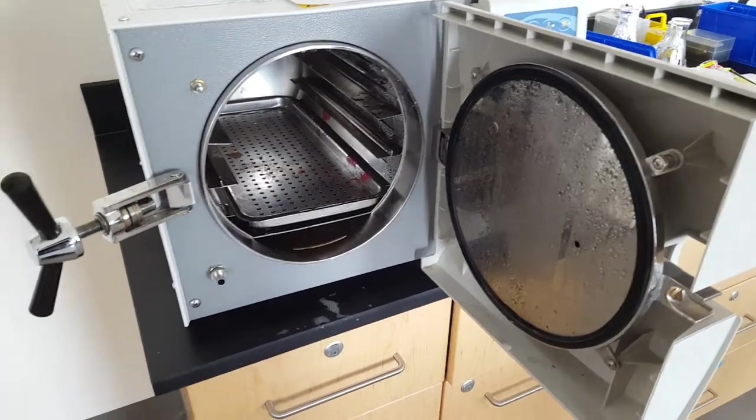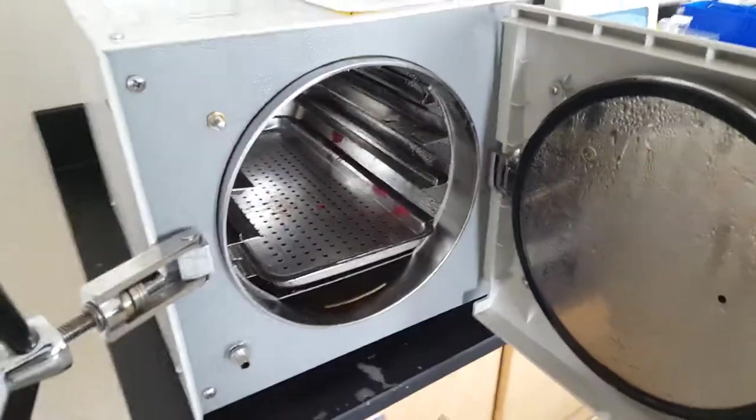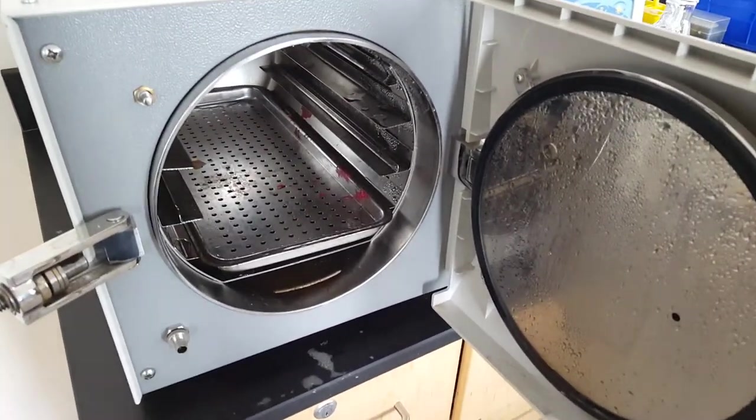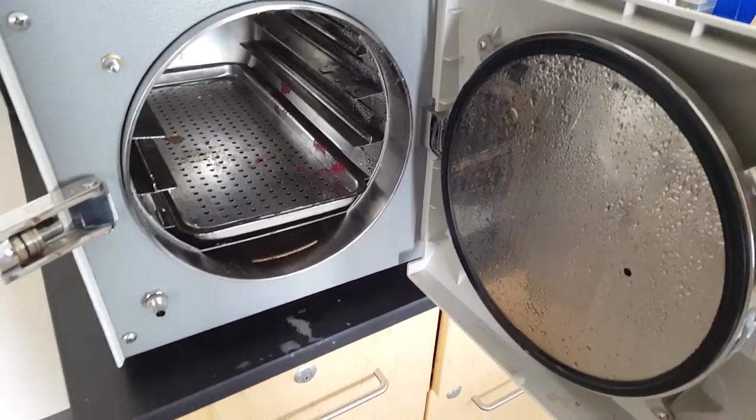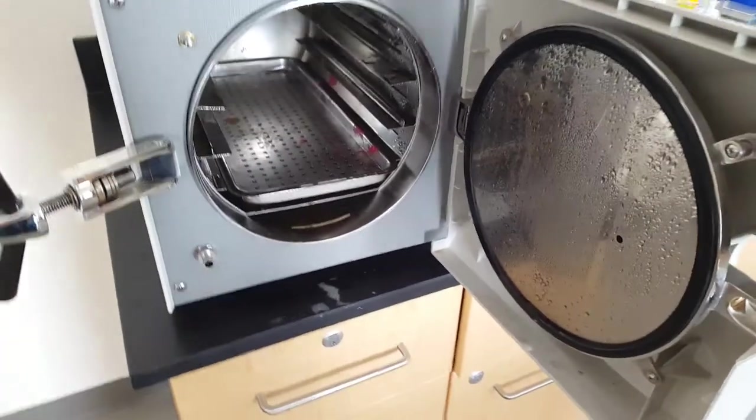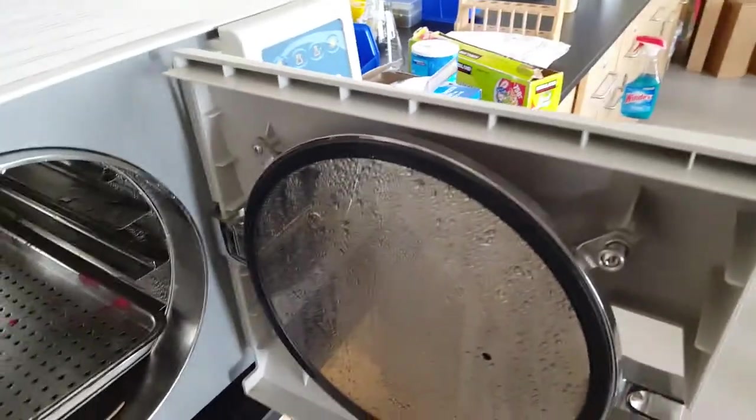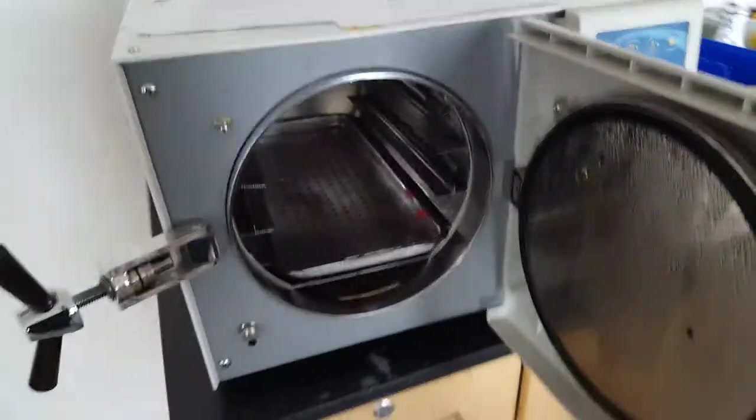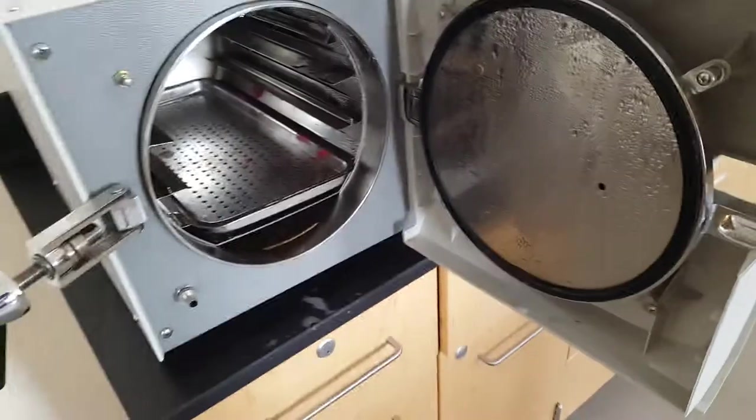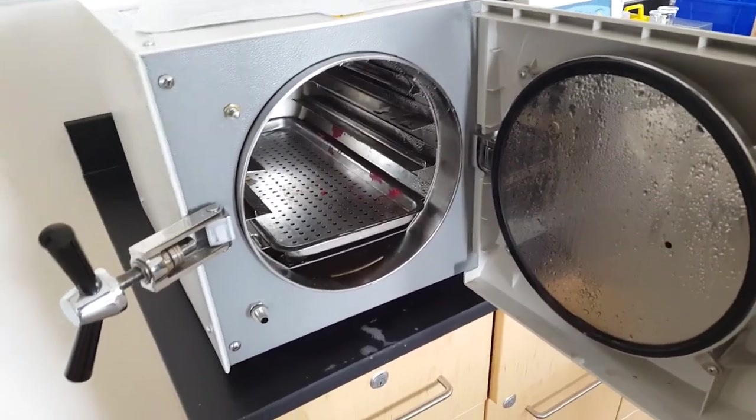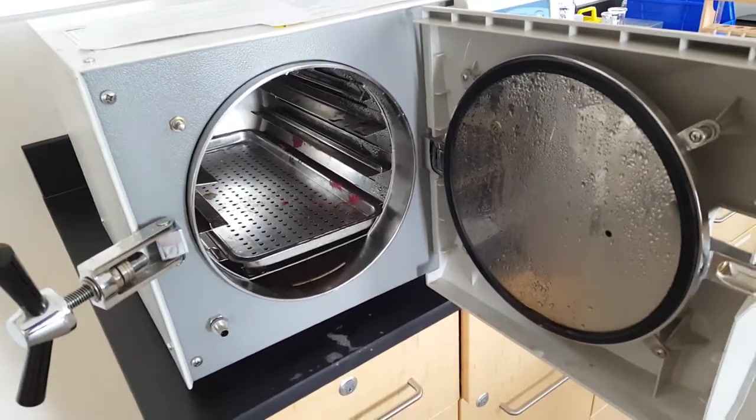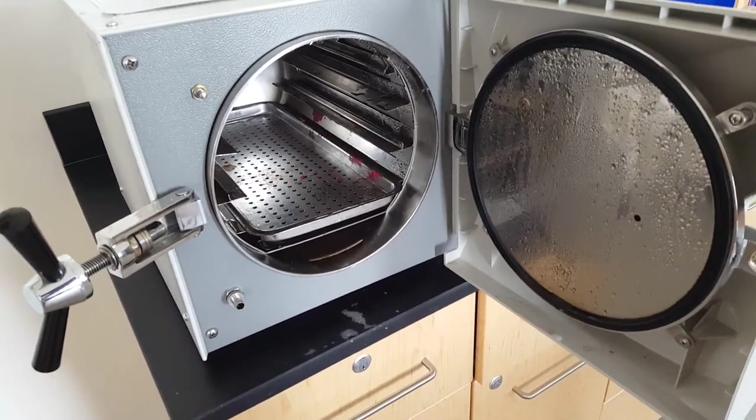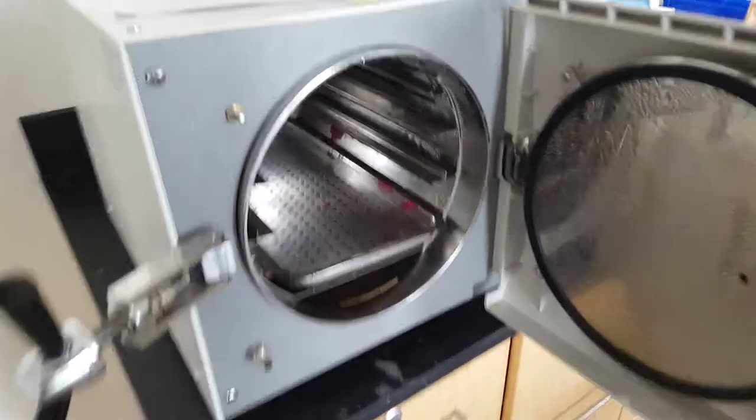So some common mistakes that you might make with the autoclave. Number one, do not put plastics in here. It's kind of common sense, but if you put plastics in here and it gets really hot and pressurized, it's really not going to be good. Also, if you're putting stuff in here, if you have one of these Pyrex bottles for instance, don't tighten the cap all the way because it's kind of just a safety precaution. The Pyrex bottles are pretty resistant to a lot of pressure, but it's good practice that you don't want to tighten them all the way because if you do, it could implode from the pressure.